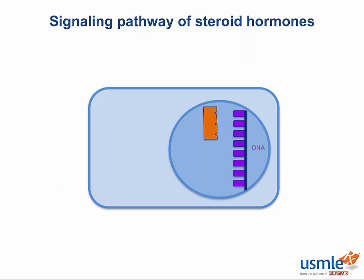I wanted to touch briefly on the general mechanism by which steroid hormones act. This is a separate section in endocrine physiology about the other types of signaling pathways, but this section gets a little bit more into the mechanism of the steroid pathway. These guys are lipophilic, which is cool because they diffuse straight through the lipid bilayer into the cell, but not cool because being lipid soluble means they're not really soluble in the aqueous medium of the blood, and being transportable in the blood is kind of a prerequisite to being a hormone.